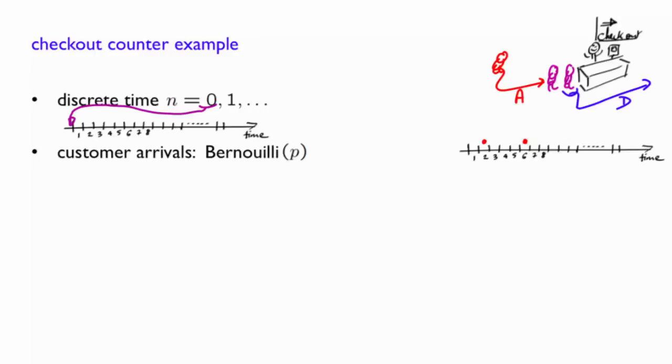From the lecture on Bernoulli process, remember that this implies that the time duration, that means the number of time steps between two consecutive arrivals, follows a geometric random variable with parameter p. So here in our example, that time duration of four is the result of a geometric random variable with parameter p.